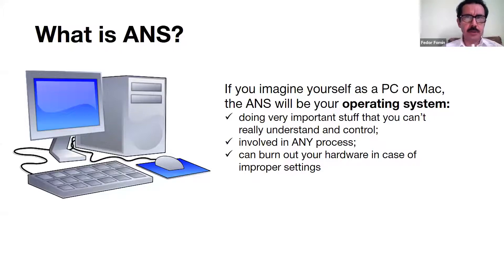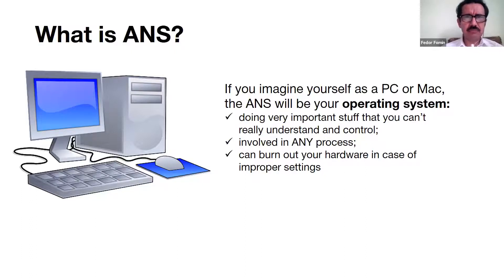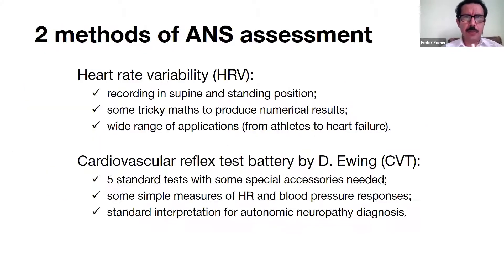As doctors, we are interested in what's happening inside, under the hood, but we are not allowed to gather data directly — we need to use indirect measures. There are some more sophisticated direct methods, but they are expensive and sometimes require needles, which is not pleasant. So we have two groups of methods for autonomic nervous system assessment.